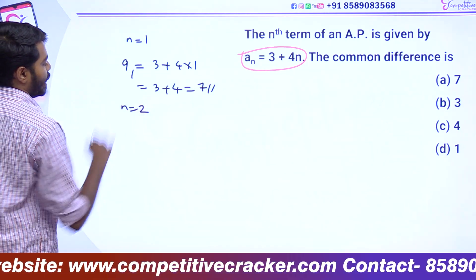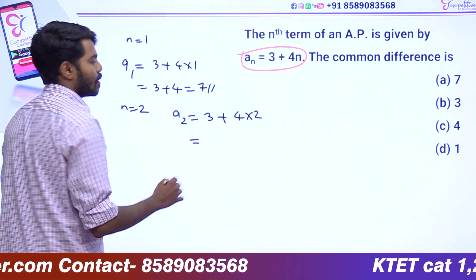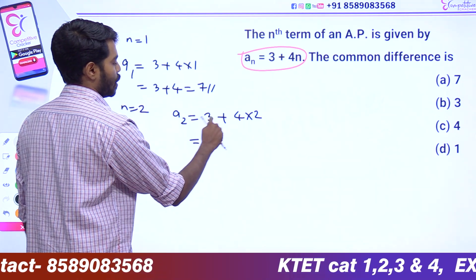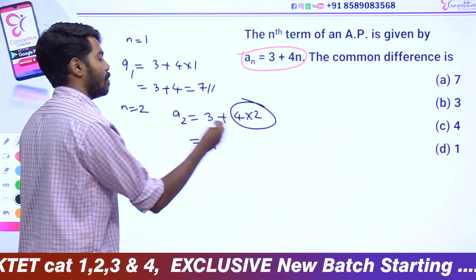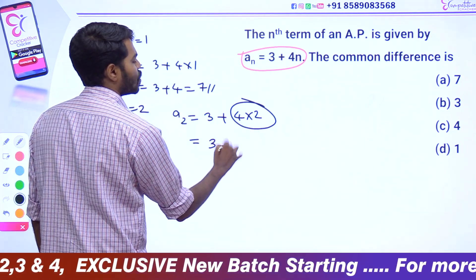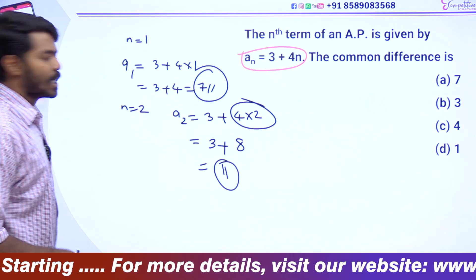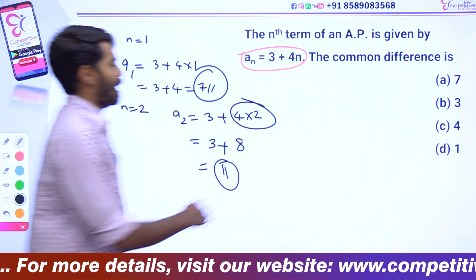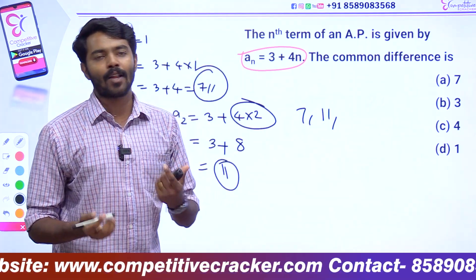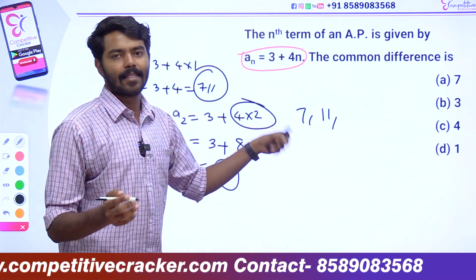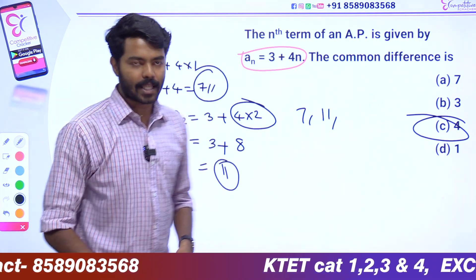Then put n equals 2: a₂ equals 3 plus 4 into 2 equals 11. When n equals 3: a₃ equals 3 plus 4 into 3 equals 15. The difference between a₂ and a₁ is 11 minus 7 equals 4, so the common difference equals 4.